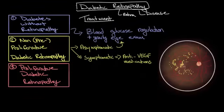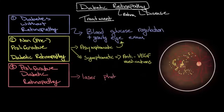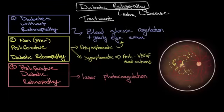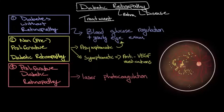Unfortunately, once someone has evidence of proliferative diabetic retinopathy with vascular proliferation of the retina, the clinical course is difficult to predict. For this reason, anyone in this stage of diabetic retinopathy is recommended to undergo a procedure known as laser photocoagulation — a process by which very precisely focused lasers are used to stop the growth of these vessels on the retina. Unfortunately, this treatment is not necessarily curative; it's more aimed at preventing serious complications such as retinal detachment, where the retina can become detached from the posterior wall of the eye, or vitreous hemorrhage, where the new blood vessels burst and bleed into the inside of the eye. Both of these conditions may potentially result in permanent blindness. Therefore, anyone with diabetes who develops sudden onset vision loss should be evaluated emergently to rule out these complications.